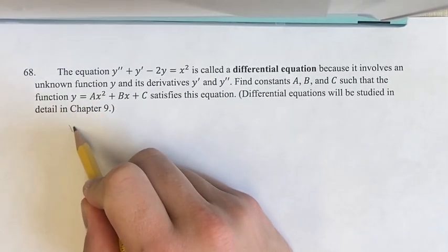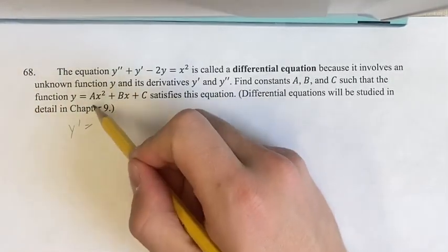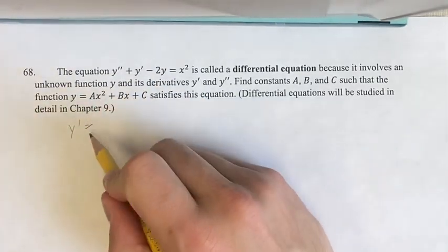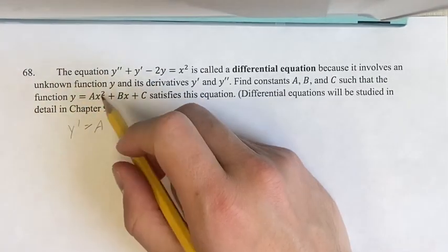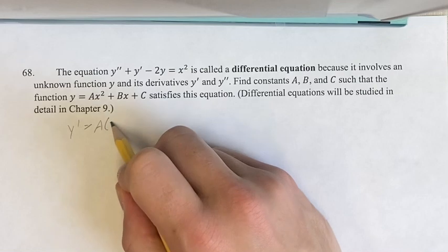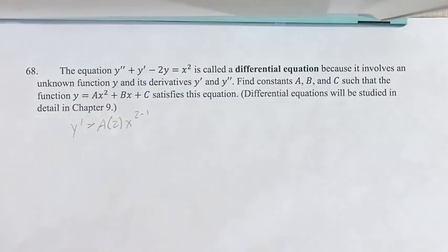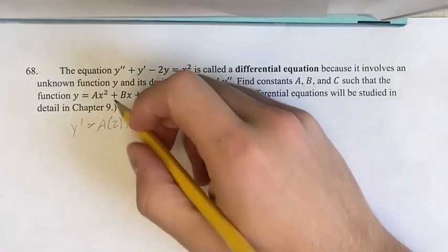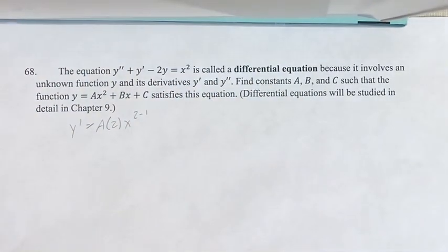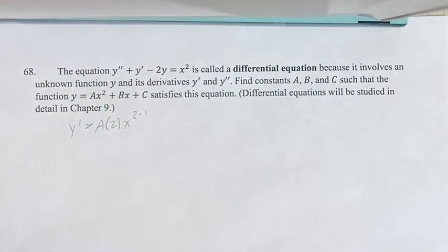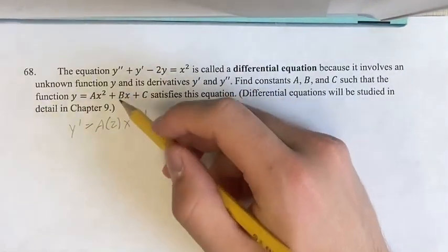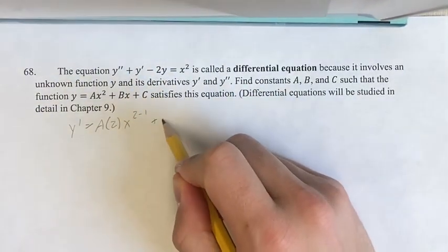So taking our form right here, we can say y prime equals, and so the derivative of this term, we take out the coefficient, we bring down the exponent because it's a power function, and then our new exponent is the old exponent minus 1. For this x term right here, when you just have x and not x to anything...